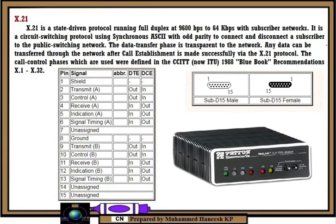X.21, sometimes referred to as X.21, is an interface specification for differential communications introduced in the mid-1970s by the ITU. It was first introduced as a means to provide a digital signaling interface for telecommunications between carriers and customer equipment.